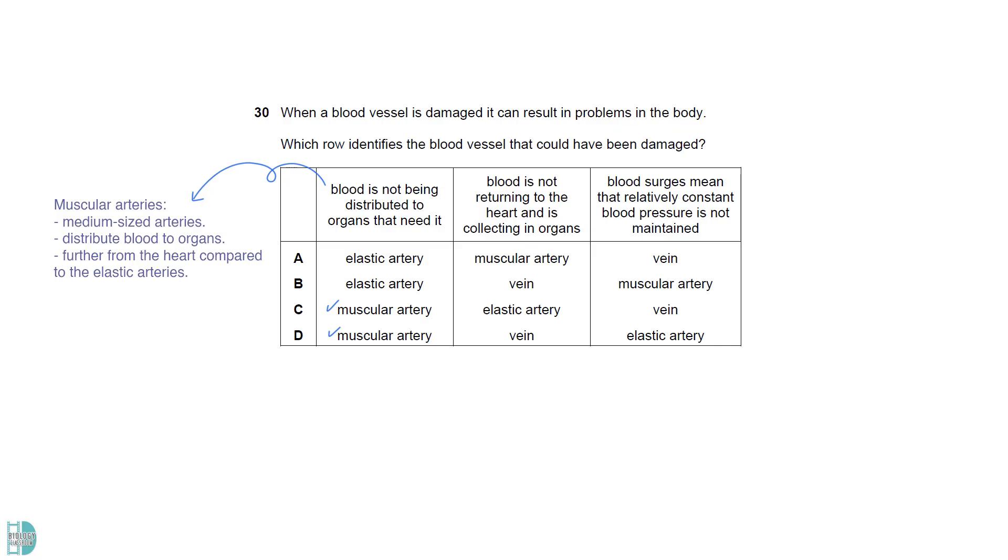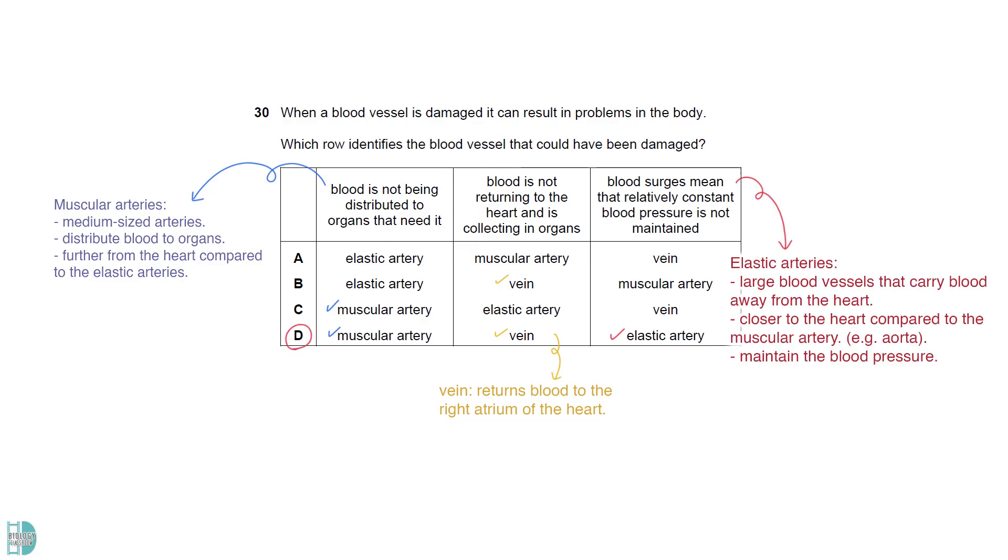Muscular arteries are medium-sized arteries that distribute blood to organs. They are further from the heart compared to the elastic arteries. If a muscular artery is damaged, the organ receiving blood from it will not get the blood. The vein is the one that returns blood to the right atrium of the heart. Elastic arteries are large blood vessels that carry blood away from the heart. They are closer to the heart compared to the muscular artery. An example is the aorta. One of its roles is to maintain the blood pressure.